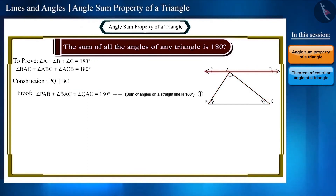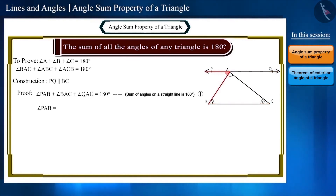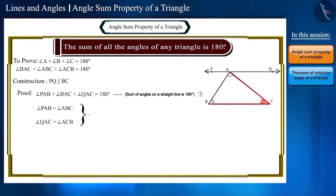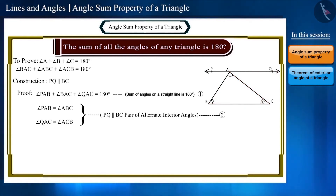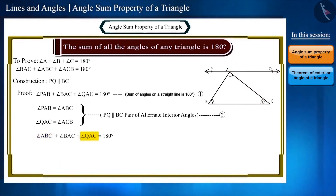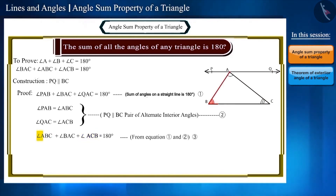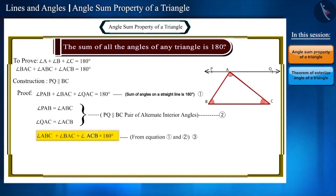Since PQ is parallel to BC, alternate interior angles give angle PAB equals angle ABC and angle QAC equals angle ACB. Substituting into equation 1: angle ABC plus angle BAC plus angle ACB equals 180 degrees. Thus the theorem is proved.